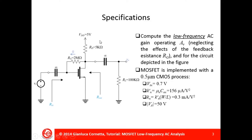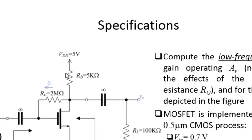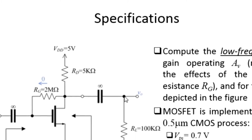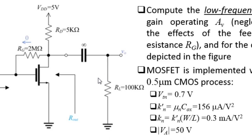The amplifier has a drain resistance RD equal to 5 kilo ohms, a gate resistance RG equal to 2 mega ohms, and supply voltage VDD equal to 5 volts. The amplifier is loaded by a load resistance RL equal to 100 kilo ohms.